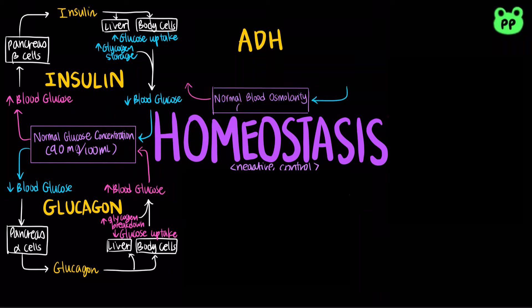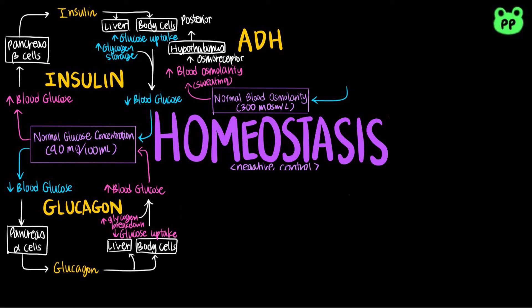The normal blood osmolarity of sodium chloride is 300 milliosmoles per liter. When blood osmolarity rises — for example, through sweating — the osmoreceptors in the hypothalamus sense it. The hypothalamus responds by producing antidiuretic hormone, ADH, or vasopressin, which is released through the posterior pituitary gland.